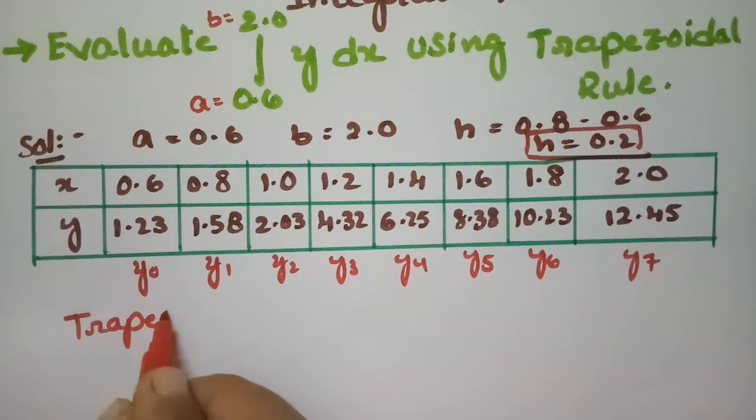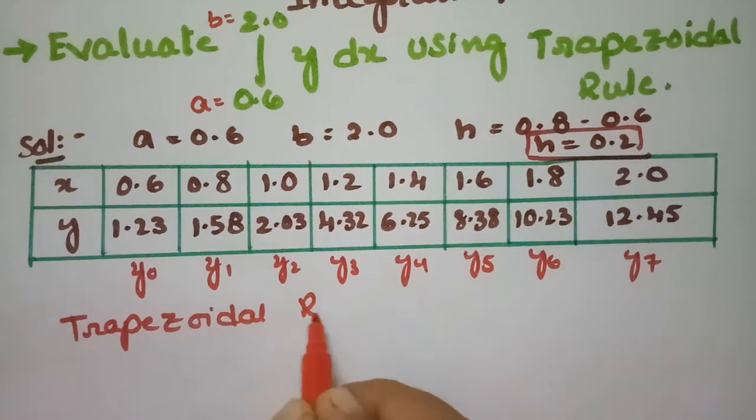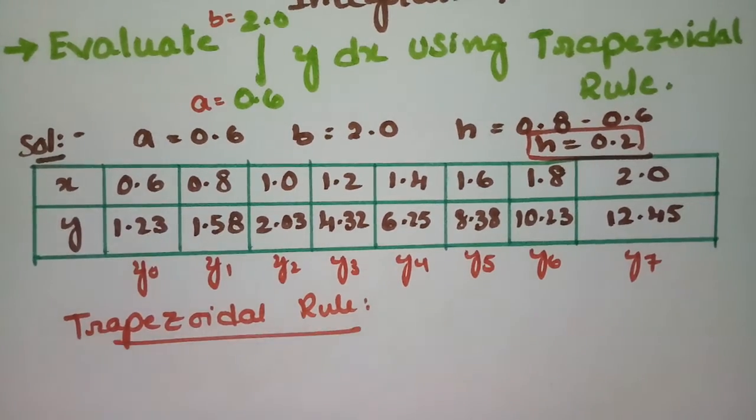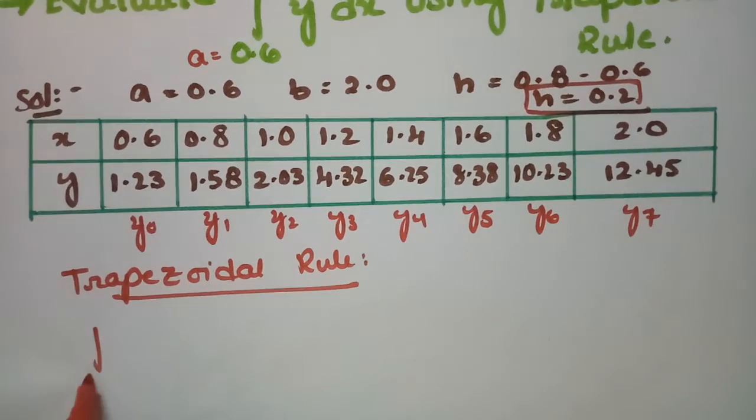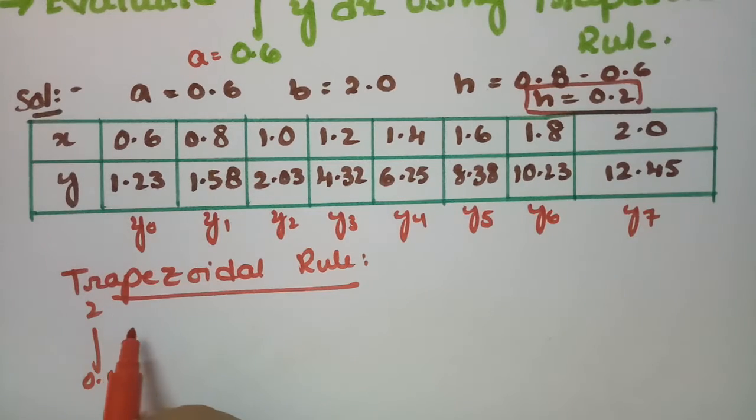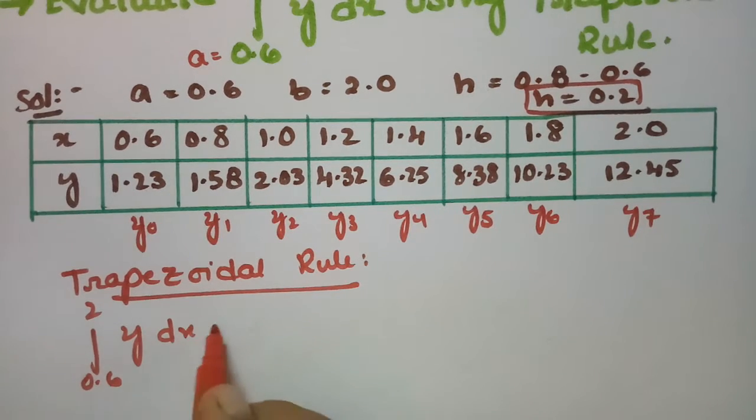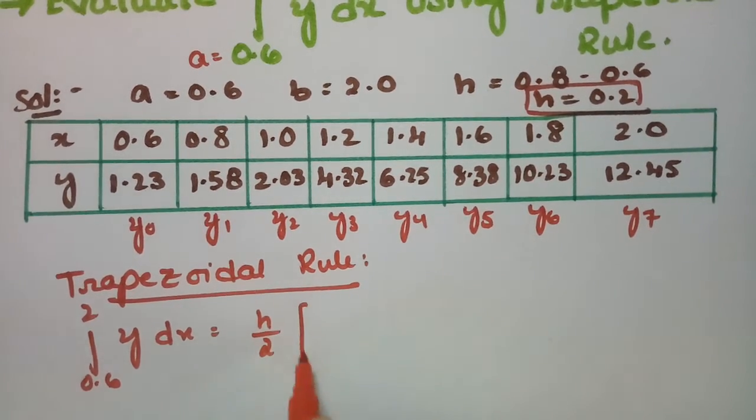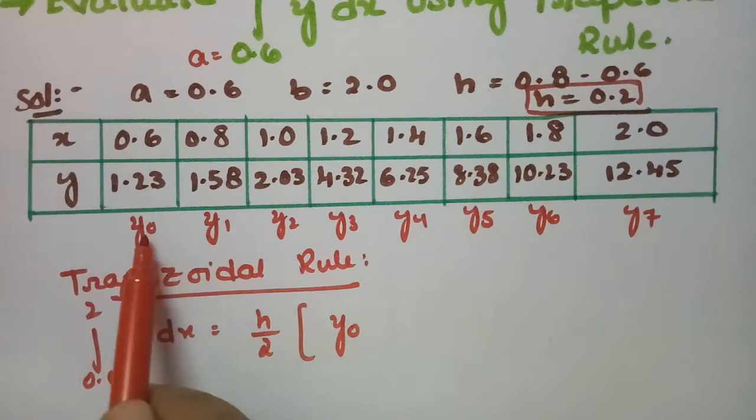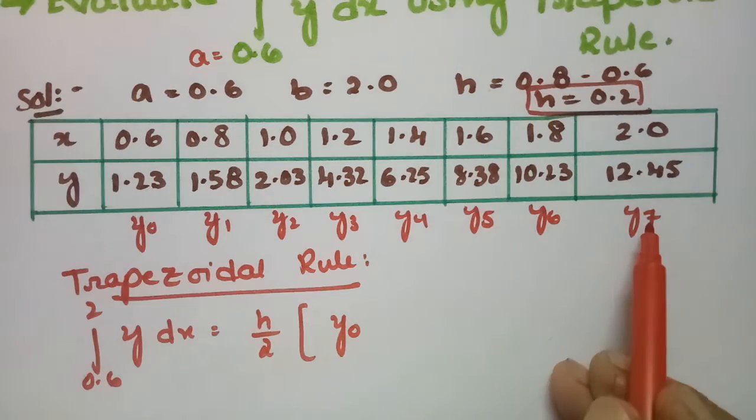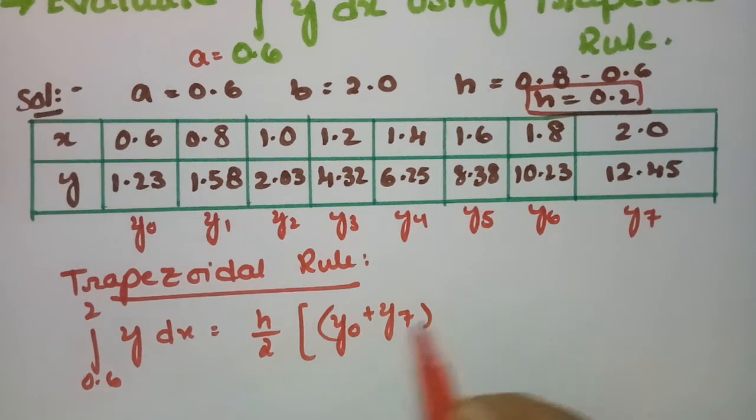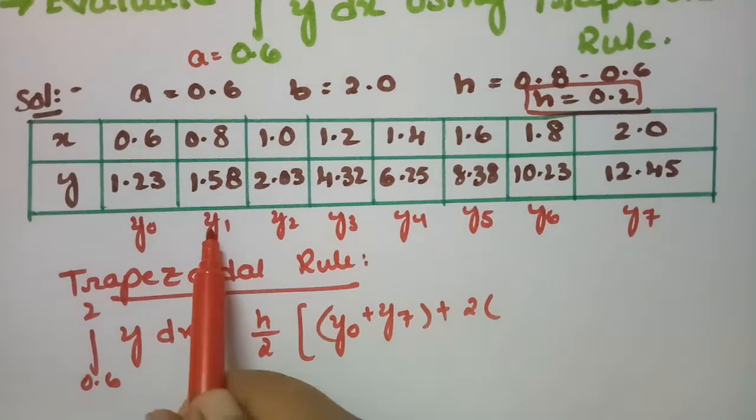According to the trapezoidal rule, for integral 0.6 to 2.0 of y dx, the value will be h by 2 times the sum of the first ordinate and the last ordinate, that is y0 plus y7, plus 2 times the remaining ordinates.